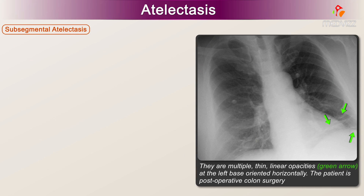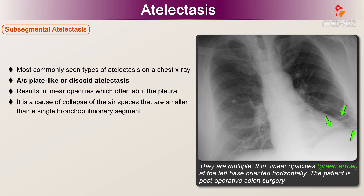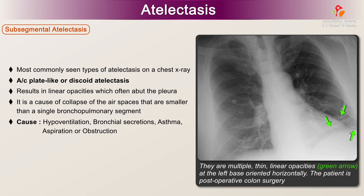Subsegmental atelectasis is actually one of the most commonly seen types on a chest x-ray. It is also called plate-like or discoid atelectasis. It results in linear opacities which often abut the pleura. It is a cause of collapse of the air spaces that are smaller than a single bronchopulmonary segment. It can be caused by hypoventilation, bronchial secretions, asthma, aspiration, or obstruction. It is often seen in patients who present with abdominal pain, because they are just not taking a very deep breath, resulting in subsegmental atelectasis.